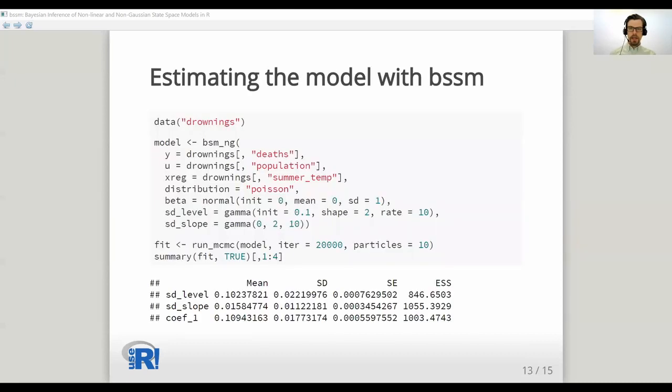Estimating this model with bssm, we can build this model using bsm_ng function, where we define our data, the population size as exposure, the distribution as Poisson, predictor variable summer temperature, and finally some priors. For priors of basic structural model, we can use helper functions normal for regression coefficient and gamma for standard deviations. Then we just call function run_mcmc with a certain number of iterations and number of particles used in the post-correction phase. By default this uses IS-MCMC, but fully approximate inference is also possible as well as normal particle MCMC methods.